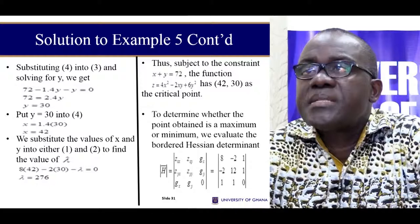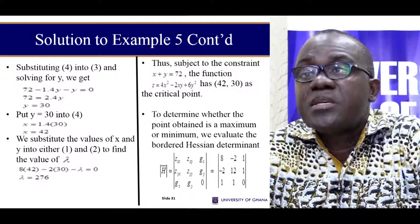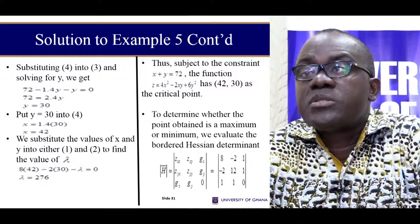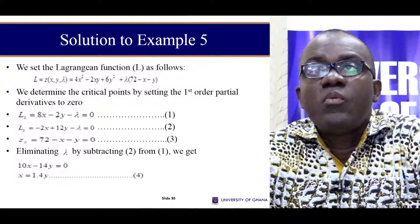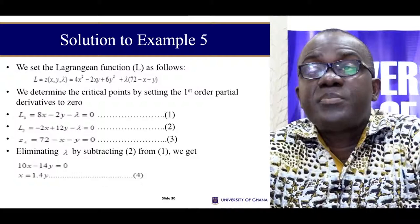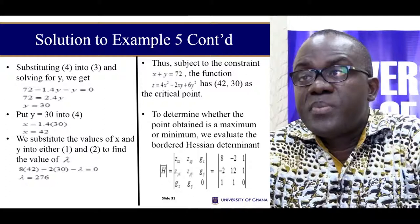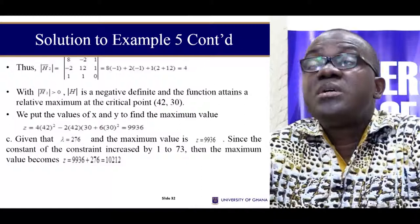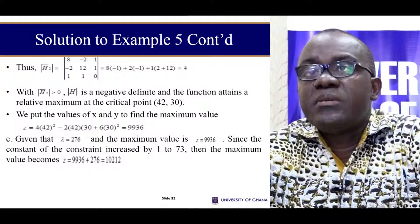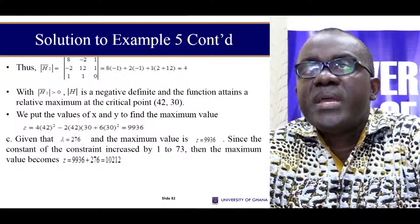The next point is that we need to find our Bordered Hessian determinant. These are the second-order partial derivatives and cross derivatives. We obtain these by differentiating the Lagrangian with respect to x, with respect to y, and then we get the values over here. The constraint function differentiated with respect to x and with respect to y gives us this — and then we put the same values here and we have our Bordered Hessian determinant. Trying to now evaluate our Bordered Hessian determinant, we get this value.